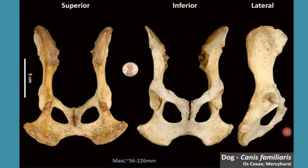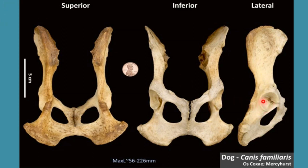At the caudomedial aspect of the acetabulum, the acetabular notch is present. The acetabular fossa is formed by the acetabular bone and ischium combinedly. While at the caudomedial aspect we have the acetabular notch, this acetabular fossa is the point where the ligament of the head of femur attaches.